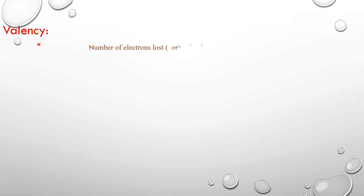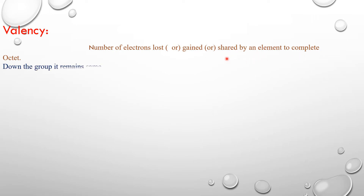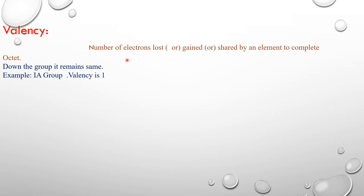Let us discuss the first property — valency. How does valency vary in periods and groups? First of all, what do we mean by valency? Valency is the number of electrons lost, gained, or shared by an atom of an element to complete the octet — that is, to have eight electrons in the outermost shell. Down the group, valency remains the same.